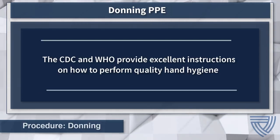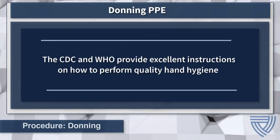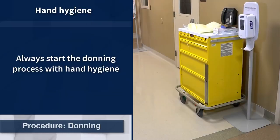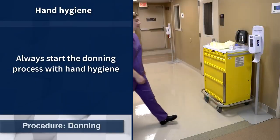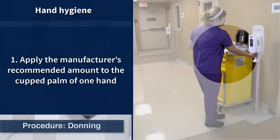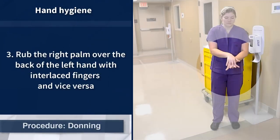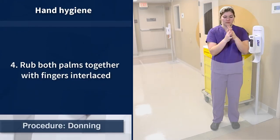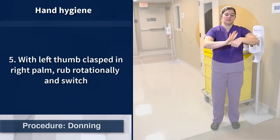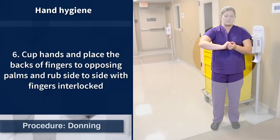The CDC and World Health Organization both provide excellent instructions on how to perform quality hand hygiene. Always begin the PPE donning procedure by performing hand hygiene. Apply the manufacturer recommended amount to the palm of one hand and rub hands palm to palm. Rub the right palm over the back of the left hand with interlaced fingers, and vice versa. Now rub both palms together with fingers interlaced. With the left thumb clasped in the right palm, rub rotationally and switch. Cup your hands and place the backs of fingers to opposing palms and rub side to side with fingers interlocked.